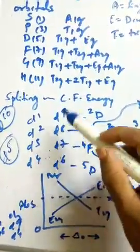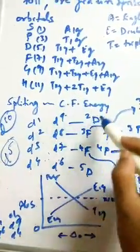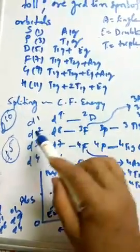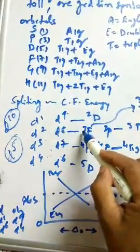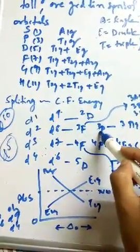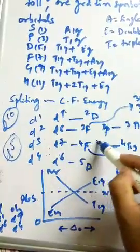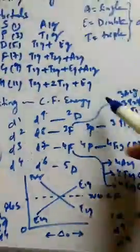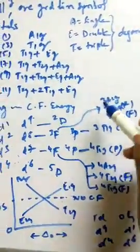The configurations covered are d1 through d9 (excluding d5 and d10). You must remember the ground terms: for d1 and d9 it is always doublet D; for d2 and d8 the ground terms are triplet F and triplet P; for d3 and d7 it is quartet F and quartet P; and for d4 and d6 the ground term is quintet D.